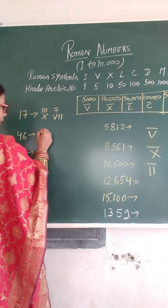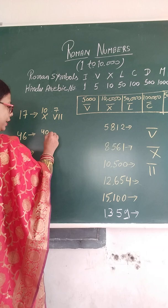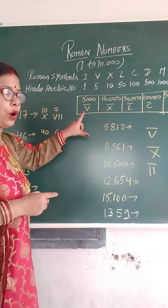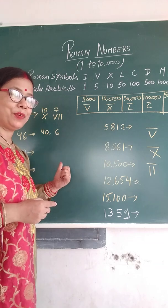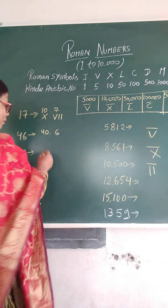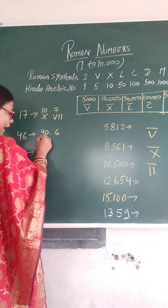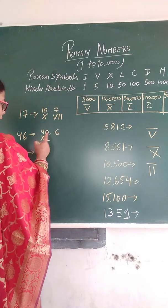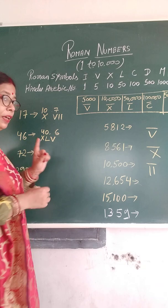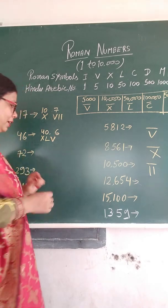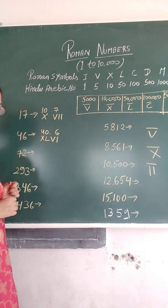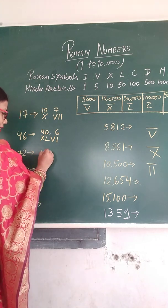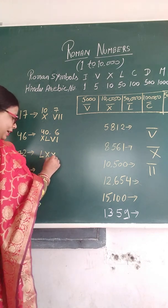46 means 40 and 6. 40 means what — 50 minus 10. 50 is L and minus 10 means X goes back, so XL. Now 6 means 5 plus 1. So it is XL, then V, then I — XLVI.